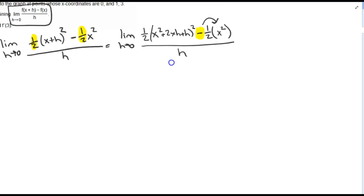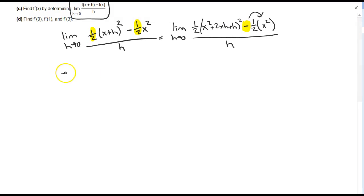So we're going to simplify the numerator. And on every single one of these, you will be able to simplify the numerator to cancel out all the terms that don't involve an h.